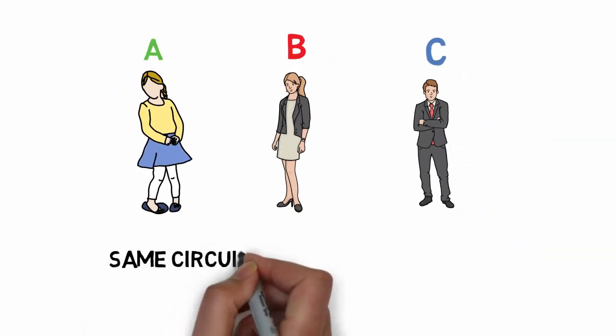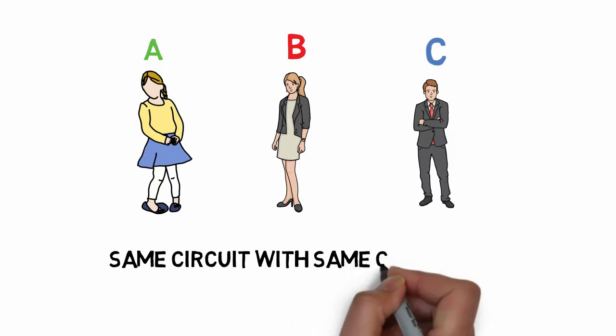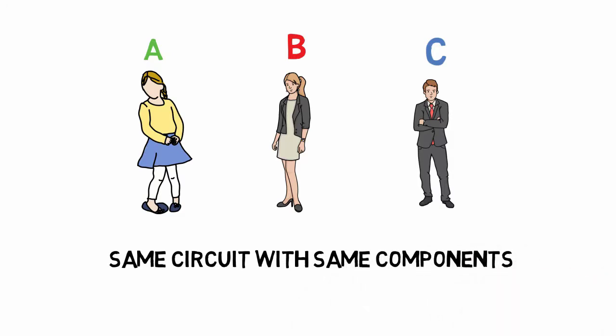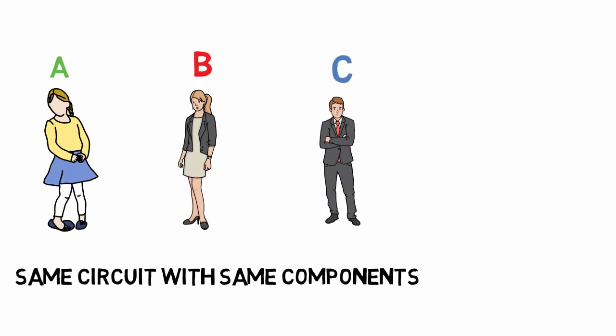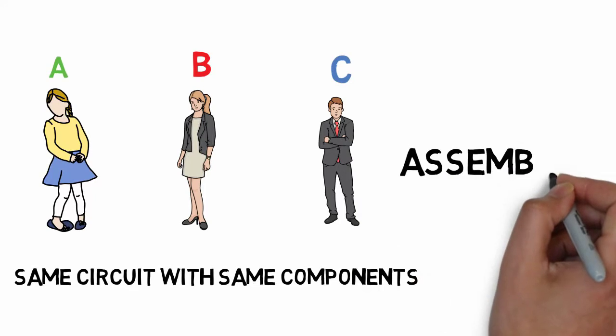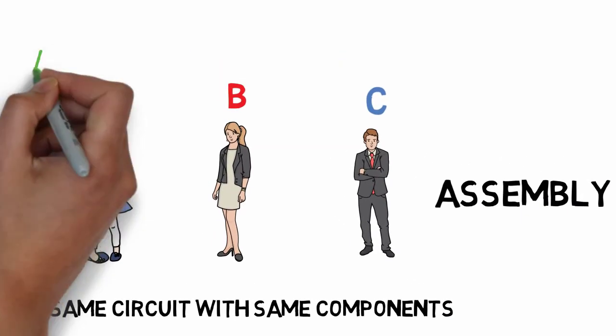If you have three boards, each has a PCB board and components. When you place components on the PCB board, there is soldering, checking, and assembly of all the components.